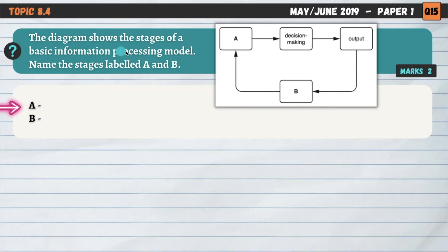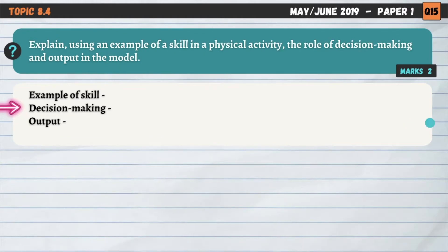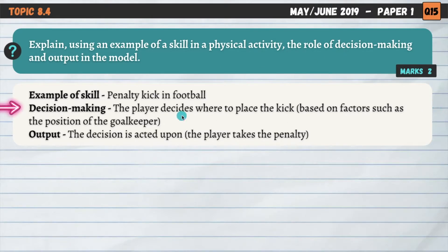Topic 8.4 — a diagram shows the stages of a basic information processing model. Name the stages labelled A and B. The answers are input and feedback. Then the next question also uses this model: explain, using an example of a skill in a physical activity, the role of decision making and output. I've gone for a penalty kick in football.